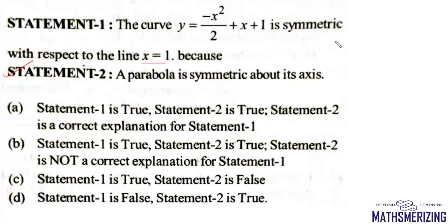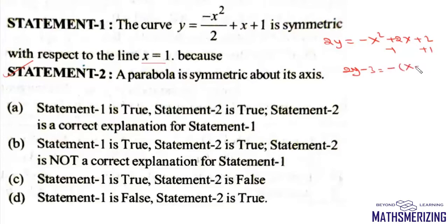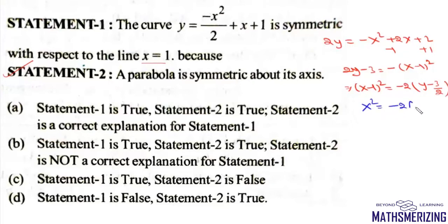I'll multiply through by 2, so I'll write 2y equals minus x squared plus 2x plus 2. I'll add 1 and subtract 1, giving 2y minus 3 equals minus x minus 1 whole squared. So I can write this equation as x minus 1 whole squared equals minus 2 times y minus 3 over 2, which is of the form X squared equals minus 2aY.